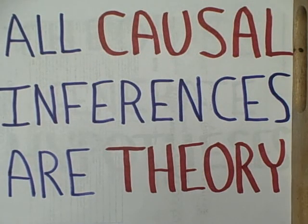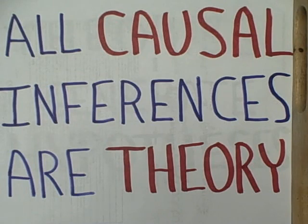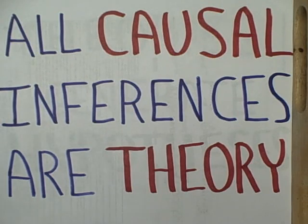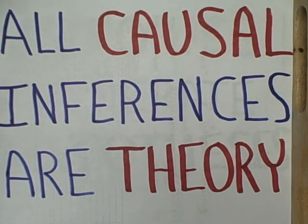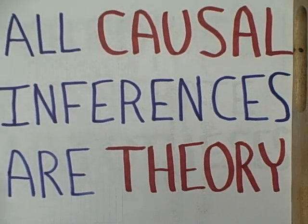All inferences that we make about causation are in the realm of theory. As David Hume once pointed out almost 250 years ago, we never observe a cause producing an effect. We observe separate events and we infer, with our theoretical speculation, an underlying cause and effect relationship.